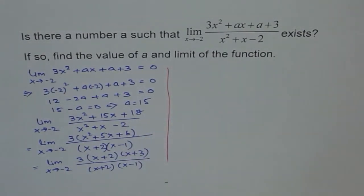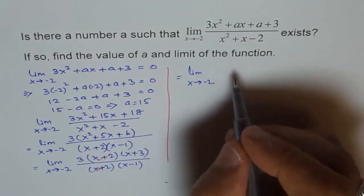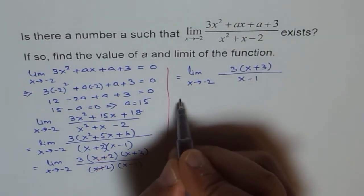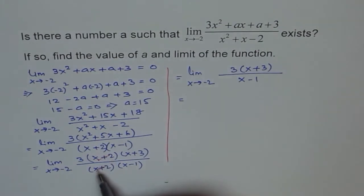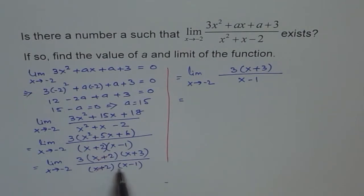We can cancel out the common factor (x + 2), which enables us to substitute minus 2. We are left with the limit as x approaches minus 2 of 3(x + 3) over (x - 1). This is why finding a worked — we needed a value of a that made the numerator also 0, meaning (x + 2) would be a common factor in both numerator and denominator, allowing the limit to exist as x approaches minus 2.